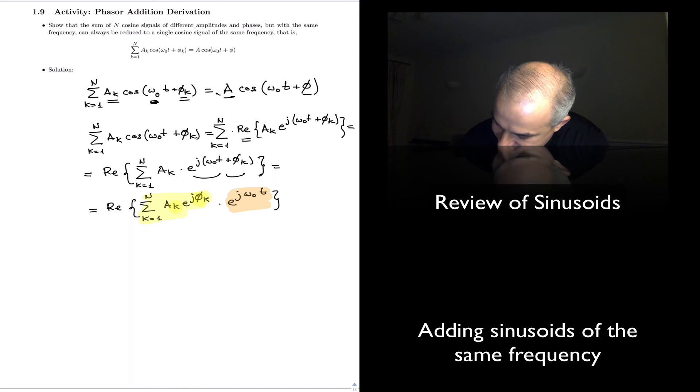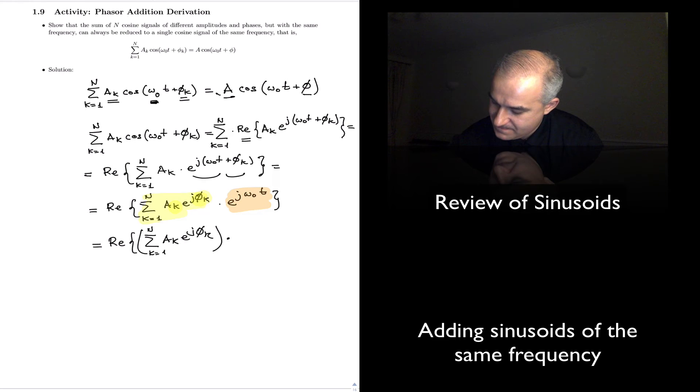and so this really is the real part of this sum, which is a phasor sum, times the summatory does not affect, at all, e to the omega zero t, because there's no k component.